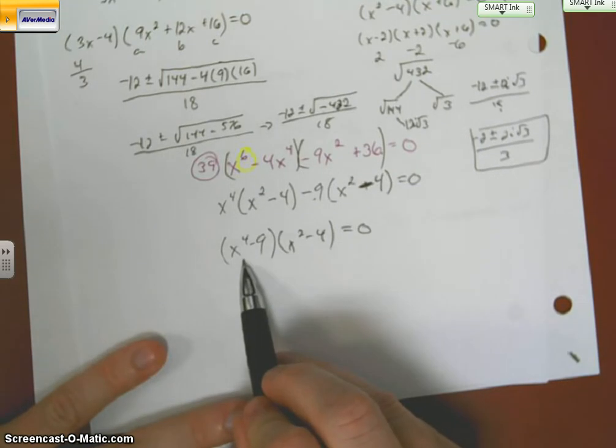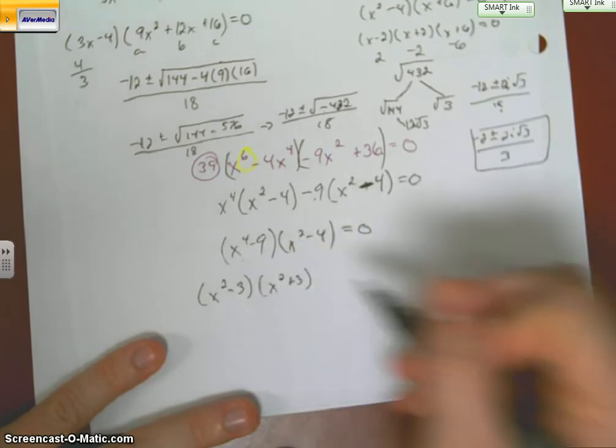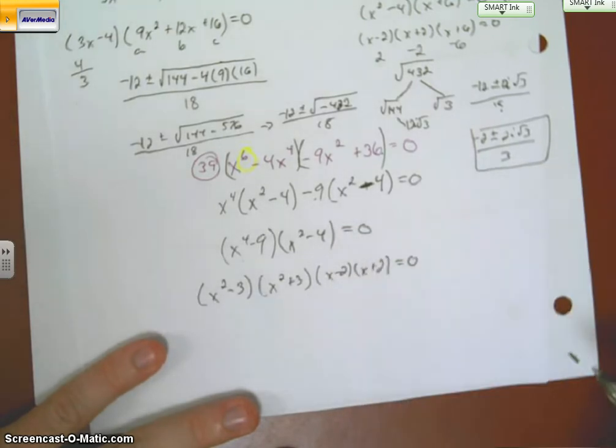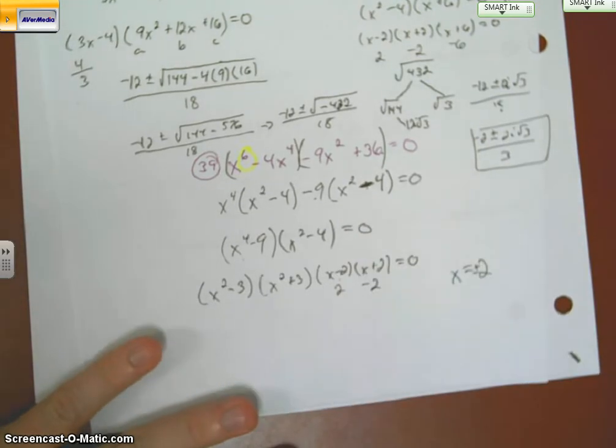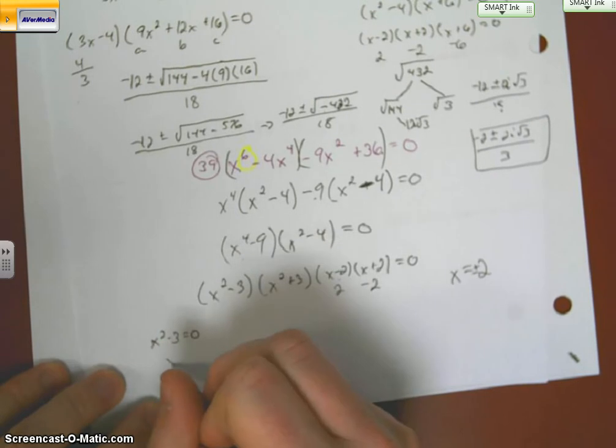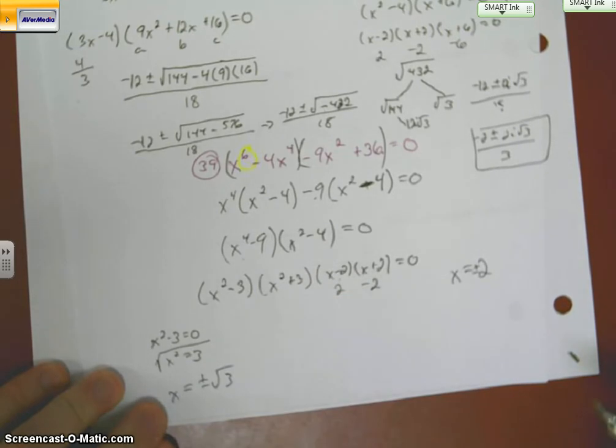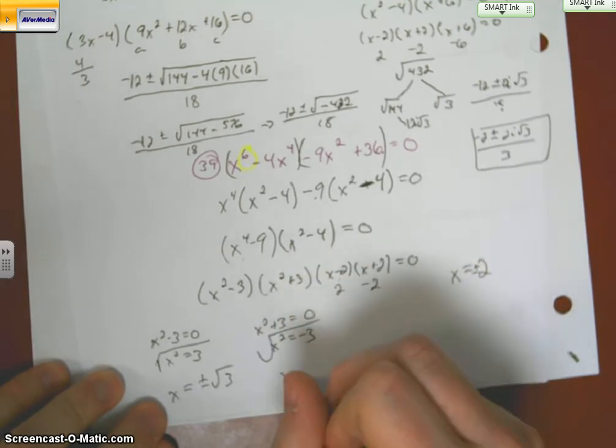This can be gone further. It's also a difference of squares because my exponent is an even number and I have a minus sign. So I have x squared minus 3, x squared plus 3. This can also go further. x minus 2, x plus 2. This is going to give me a positive 2. That's going to give me a negative 2, so plus or minus. Then these two problems right here can be solved by using the square root method. So x equals plus or minus rad 3. And this one is going to be plus or minus i rad 3, since the 3 was negative.